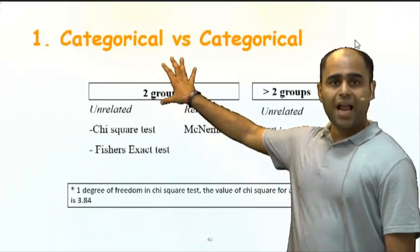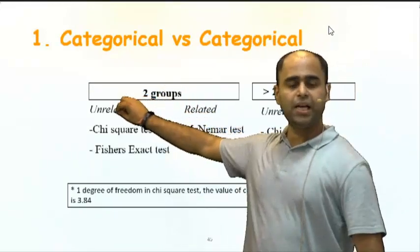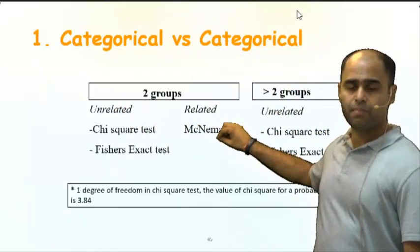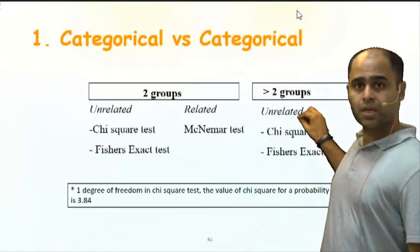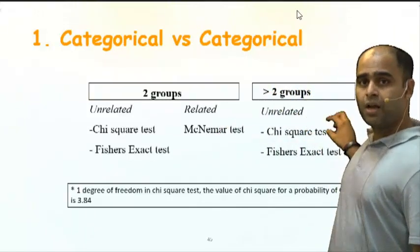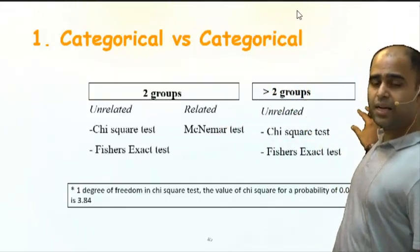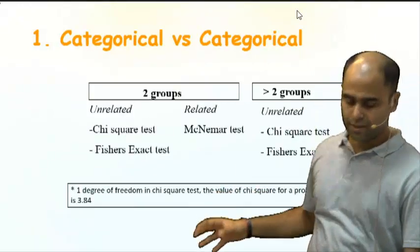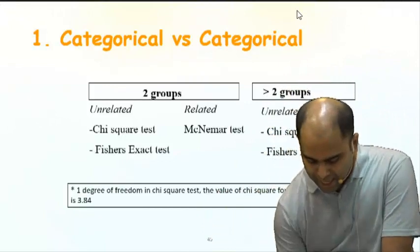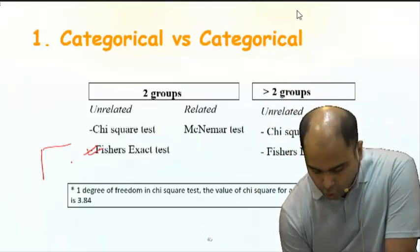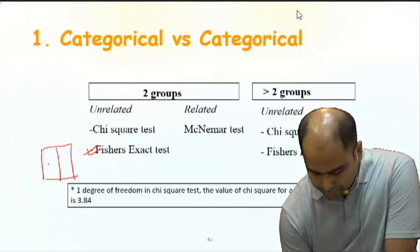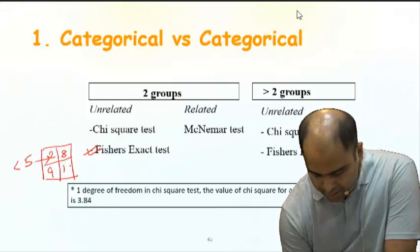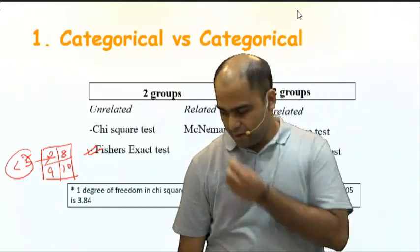Algorithm one: for two groups unrelated, use chi-square or Fisher exact. For two groups related, use McNemar. For more than two groups unrelated, also use chi-square or Fisher exact. Note there is no related category for more than two groups with qualitative output. Fisher exact is used when, in the 2×2 table of a chi-square, any value is less than 5 — for example, values like 2, 8, 9, 10 where one cell is below 5.